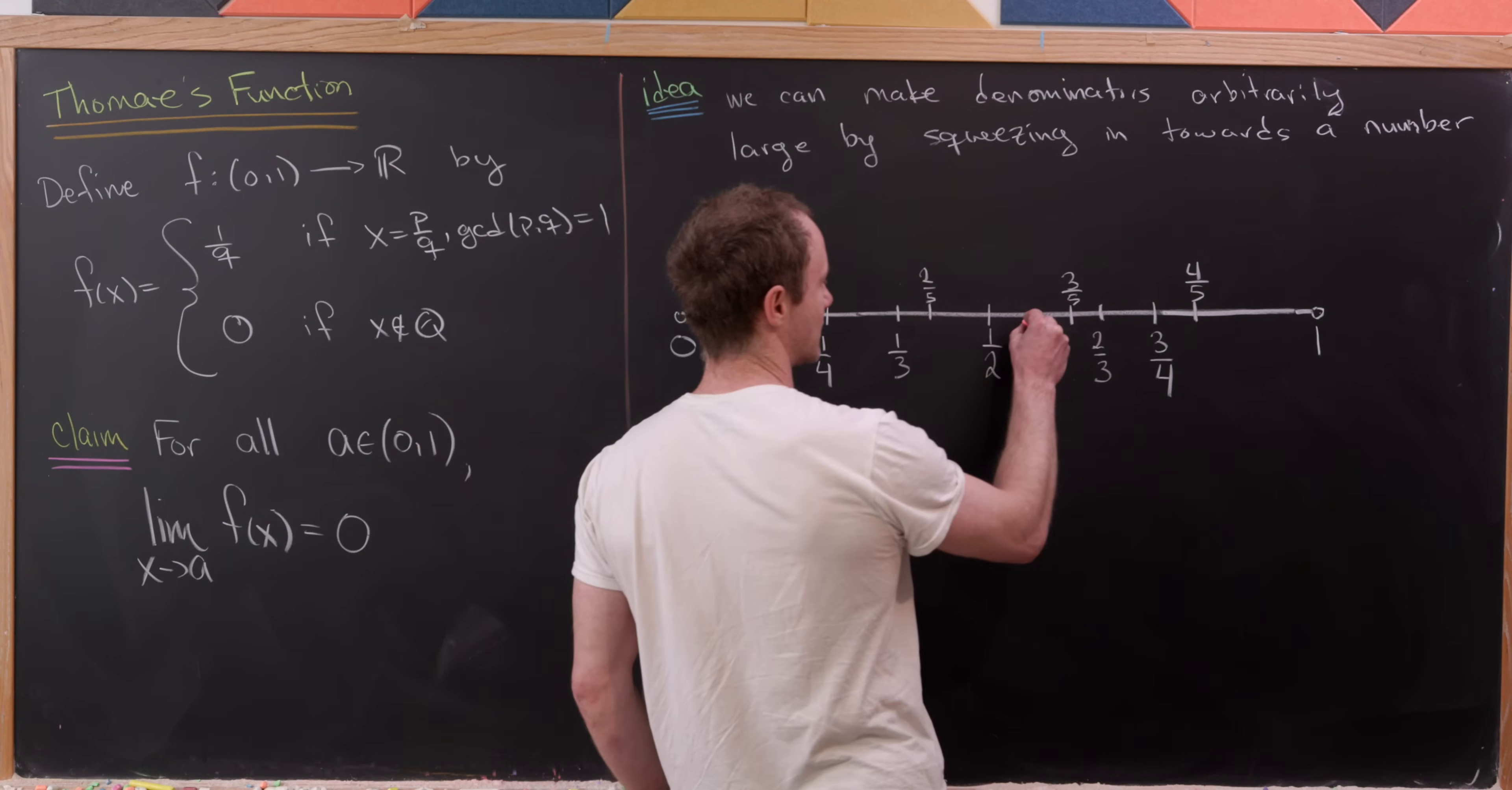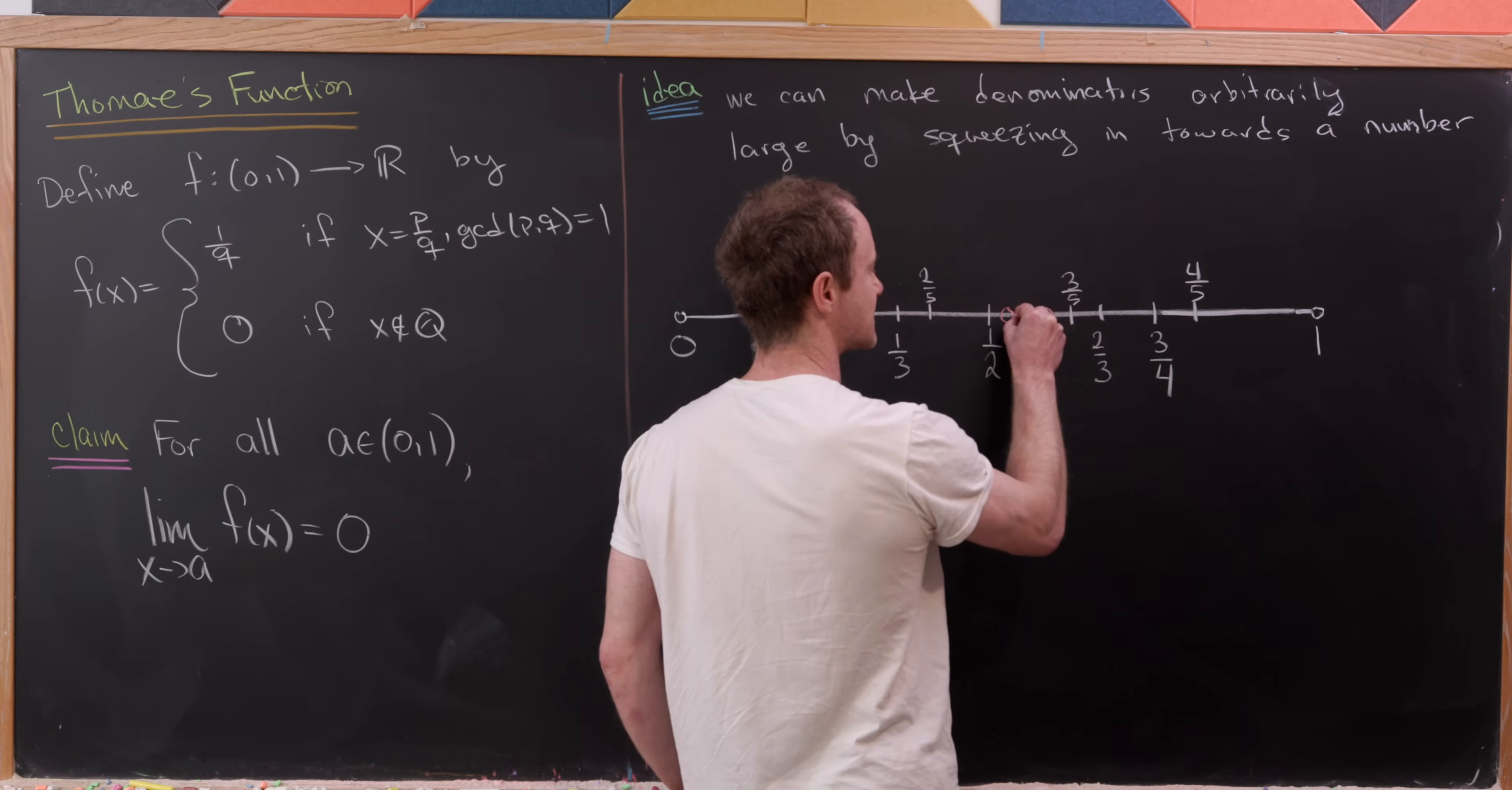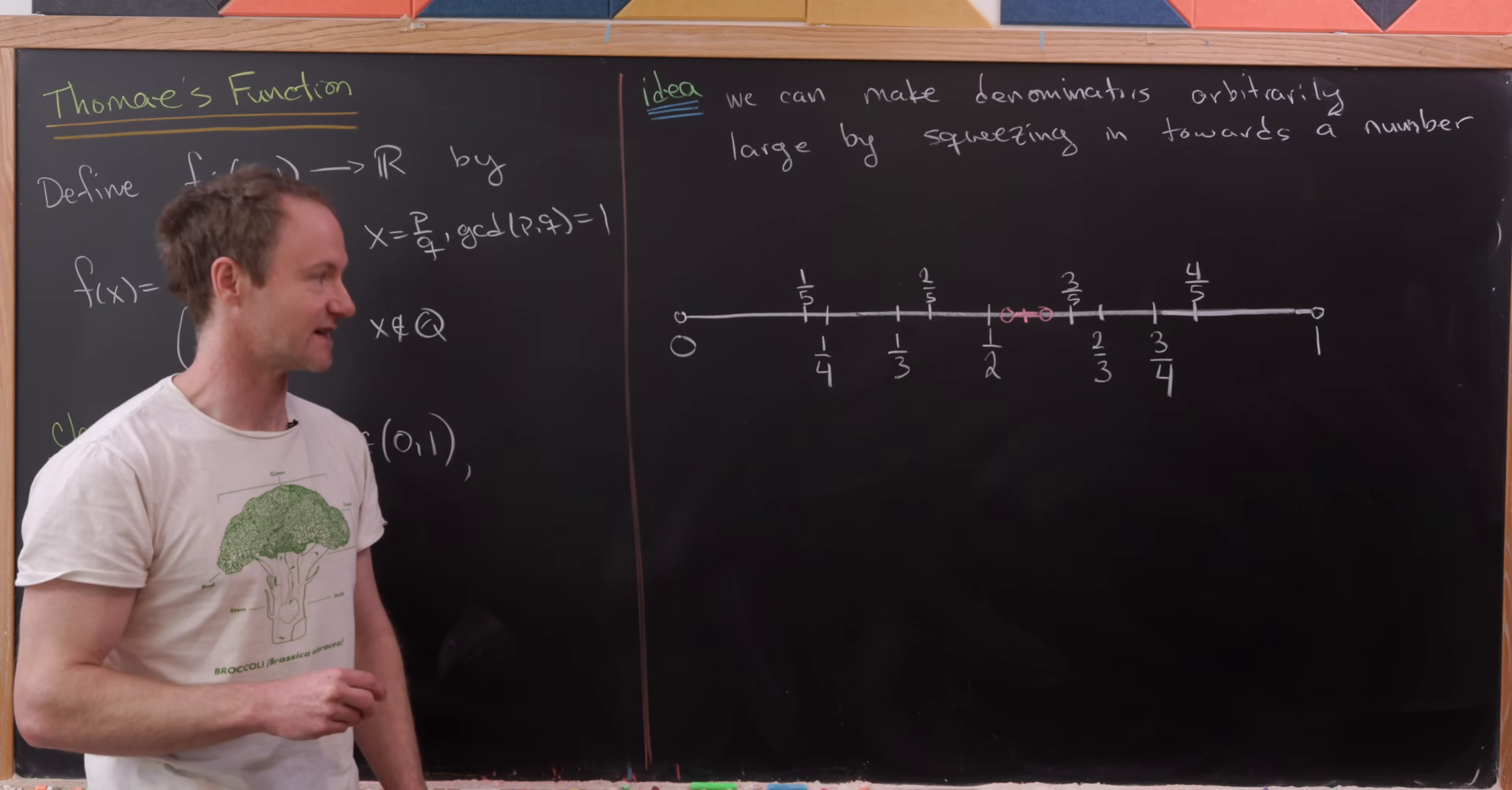For example, if I pick a number right here, so that's between a half and two fifths, or that's three fifths, then notice if I pick an open interval, perhaps from here to here, I'm guaranteed that that open interval contains rational numbers whose denominators are necessarily bigger than or equal to six.